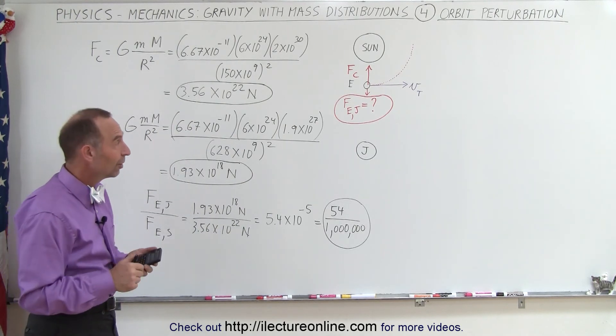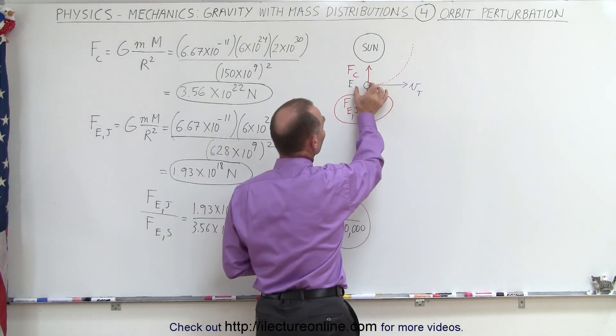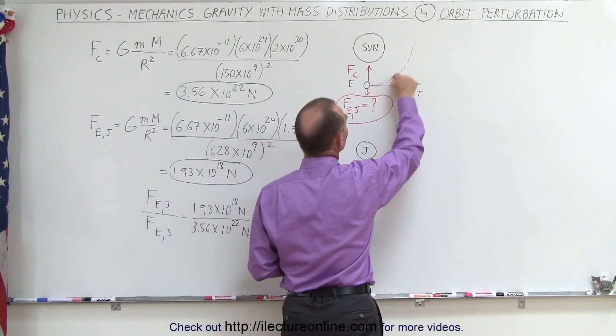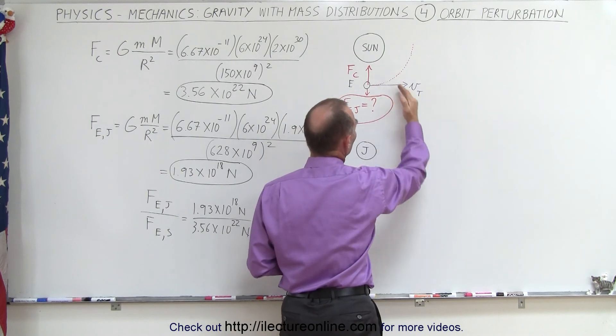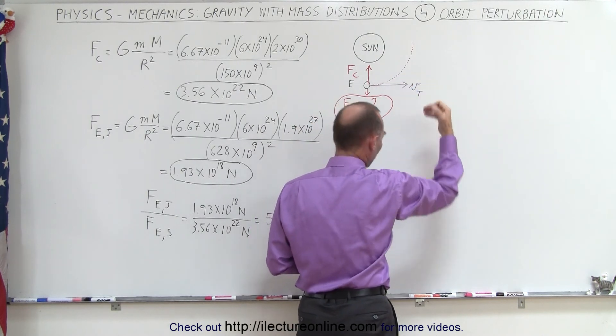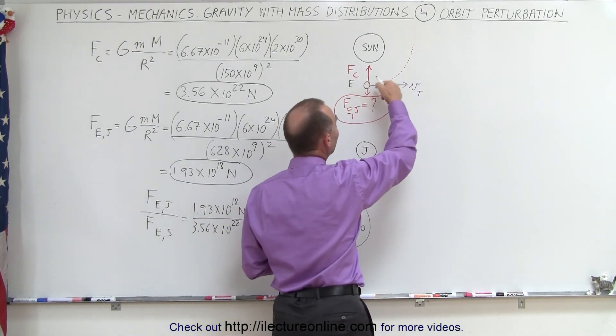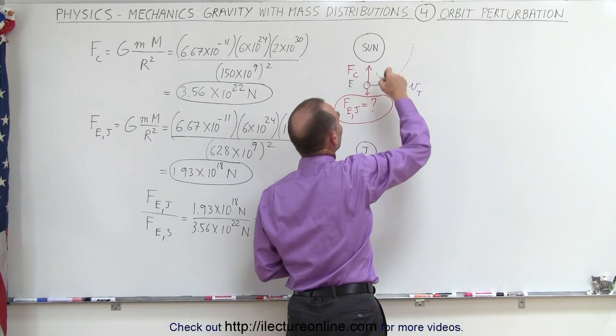Now it may not seem like much, but what that does, and of course each 13 months, so the Earth will be over here 13 months later after one complete orbit, and then Jupiter will be aligned over here, and they'll tug on it repeatedly. Instead of staying in its typical orbit around the Sun, the orbit will change.